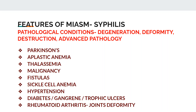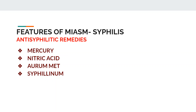The anti-syphilitic remedies are: Mercurius, Nitric acid, Aurum metallicum, and Syphilinum. Mercury is a very prominent anti-syphilitic remedy. Aurum metallicum is very important for the mental aspect in syphilitic miasm — this patient is having suicidal thoughts — and Aurum met also has very important action on the heart. Syphilinum is the nosode. All these remedies are important anti-syphilitic remedies.